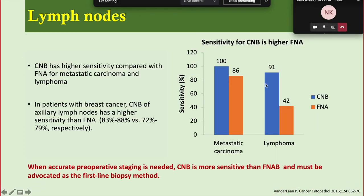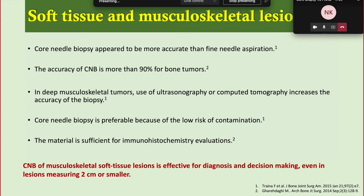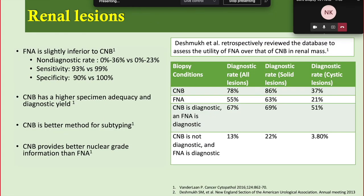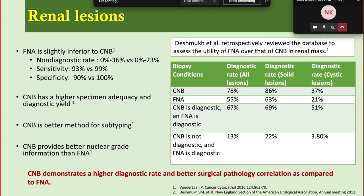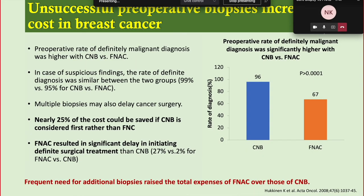For lymph nodes, core biopsy shows higher sensitivity — 100% in metastatic carcinoma and approximately 91% in lymphoma — compared to fine needle aspiration cytology. For accurate preoperative staging, core biopsy is more sensitive than FNAC and must be advocated as the first-line biopsy method. For soft tissue and musculoskeletal lesions, core biopsy is effective for diagnosis even in lesions measuring less than two centimeters. For renal lesions, a higher diagnostic rate and better surgical-pathological correlation have been demonstrated compared to FNAC.